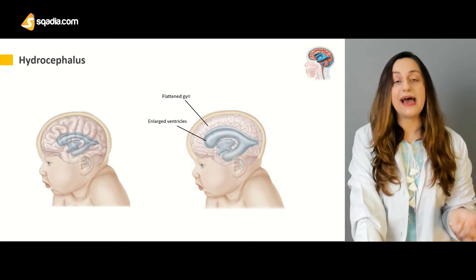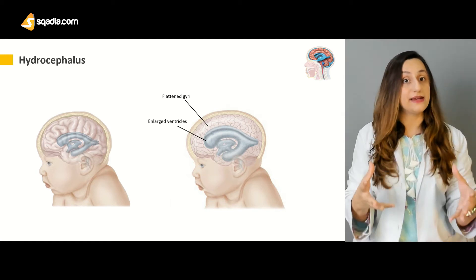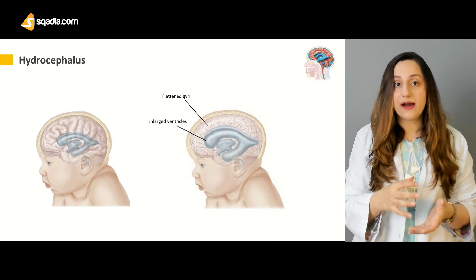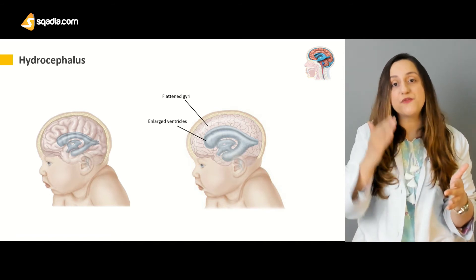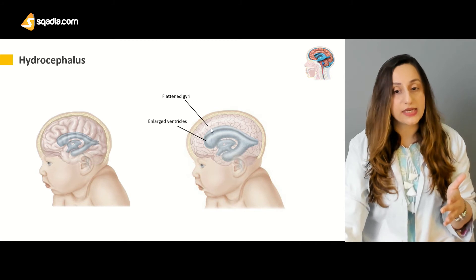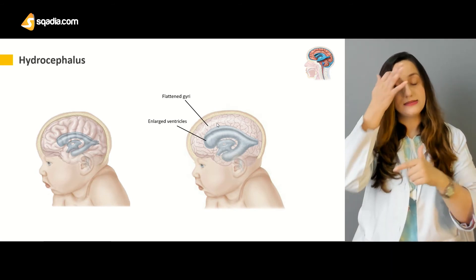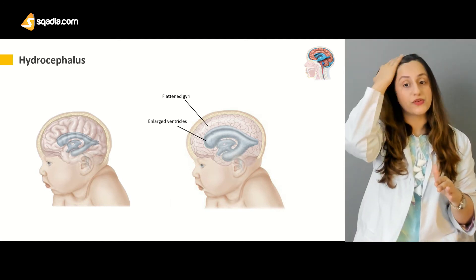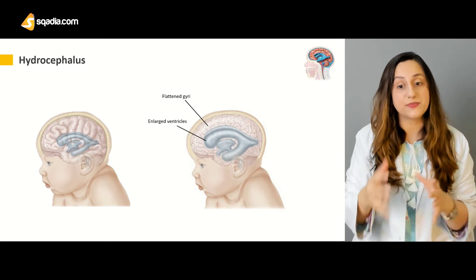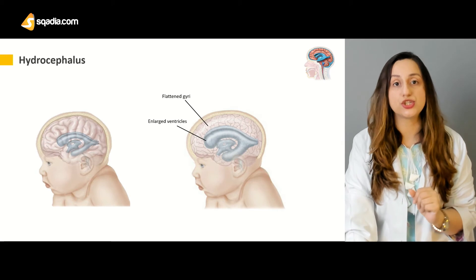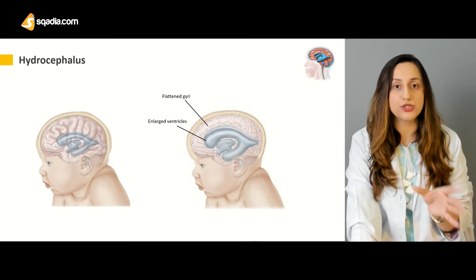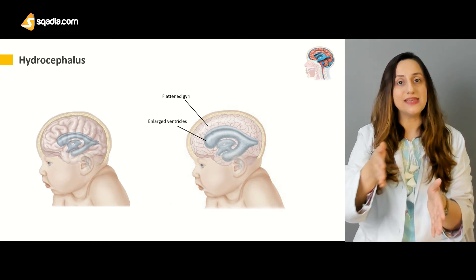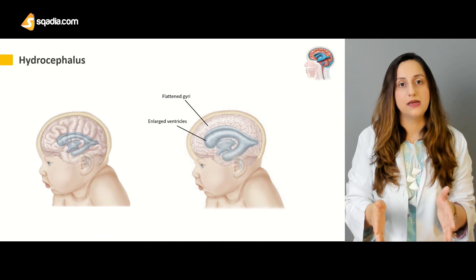The patient can also have flattened gyri. The gyri are the folds present in the cerebral cortex, and the sulci are the deep fissures in between — as visible here, this is the gyrus and these are the sulci. Flattened gyri are diagnostic of hydrocephalus or increased intracranial pressure. These two conditions — hydrocephalus and increased intracranial pressure — go hand in hand most commonly.